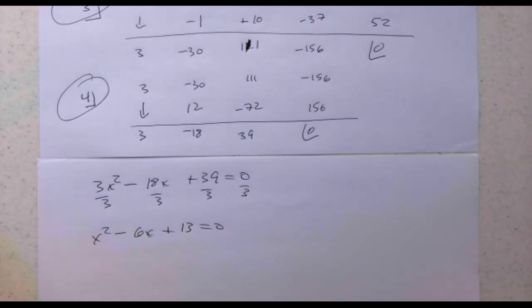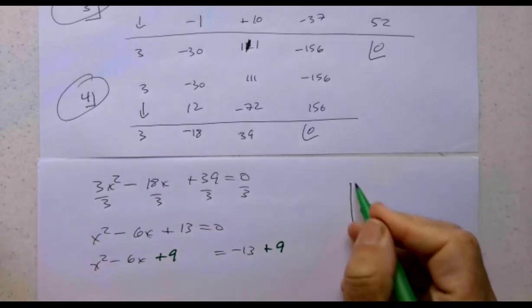And this I need to solve. Maybe I'll go ahead and solve it by completing the square. x^2 - 6x = -13, half of 6 is 3, 3 squared is 9, add 9 here, add 9 there.